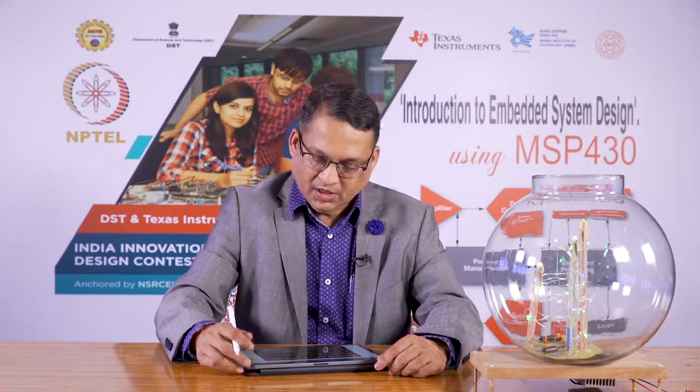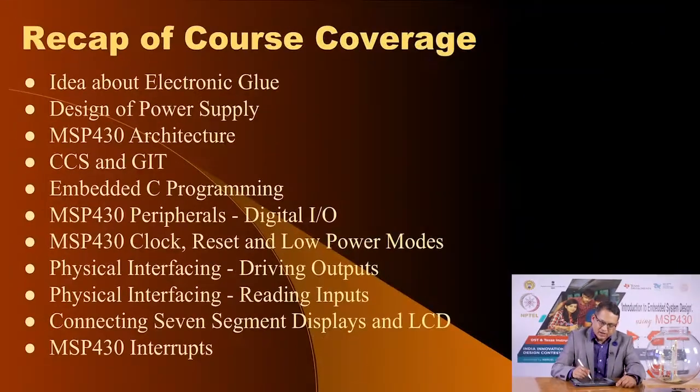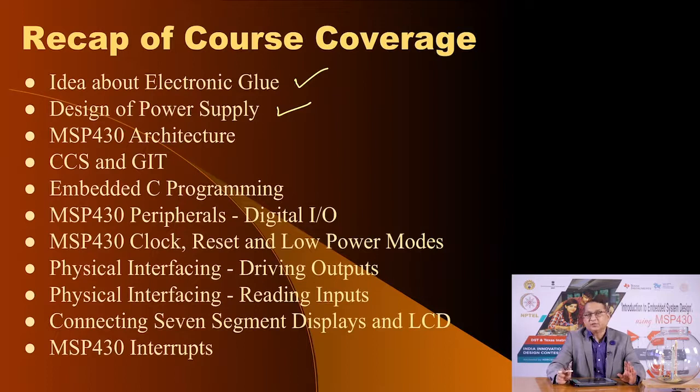The output box allows the controller to interact with the outside world by controlling output devices such as motors, relays, LEDs, and LCDs. We also looked at host and storage for storing large amounts of data, a communication box for the embedded system to communicate with the outside world, and the power supply block. We then looked at the concept of electronic glue — the circuits that bind all six boxes together — and had a dedicated session on power supply design, which is a very neglected but important topic.